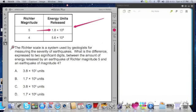The Richter scale is a system used by geologists for measuring the severity of earthquakes. What is the difference expressed in two significant digits between the amount of energy released in an earthquake of Richter magnitude 5 and an earthquake of magnitude 4?